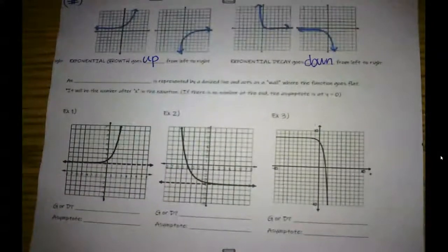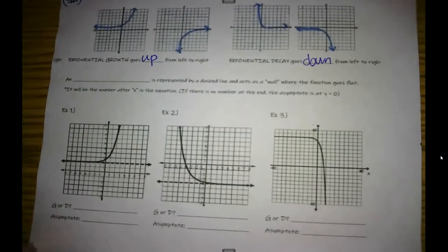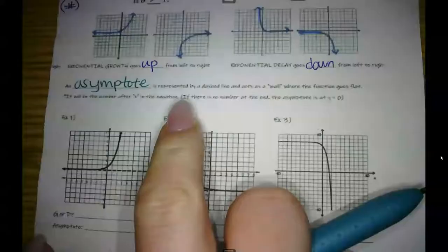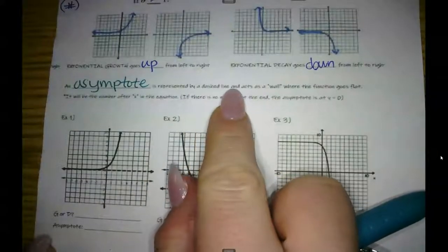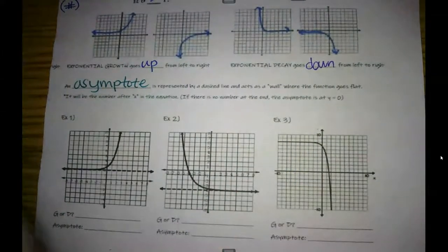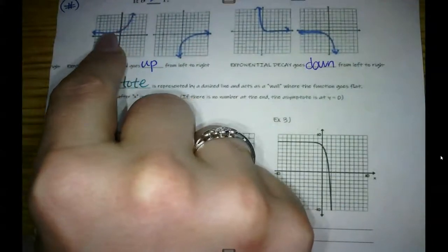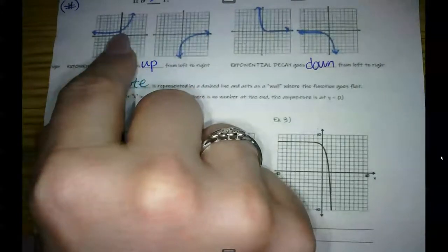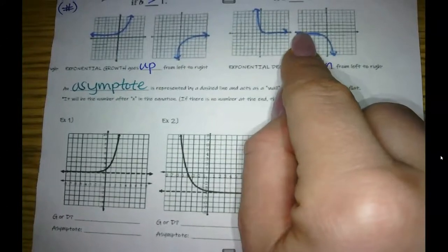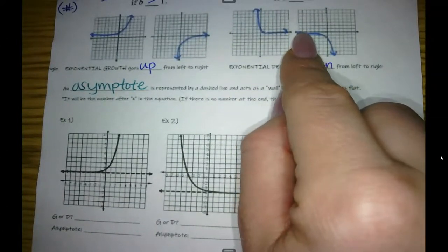So the only other part of these functions is this thing called an asymptote. And what this basically says, even though it's very blurry, let's see if I can clear that up, is an asymptote. And I'm going to spell it out right here. This graph here, it's not spelled how you would think, is represented by a dashed line and acts as a wall where the function goes flat. So you see how this graph, it starts bottoming out. Bottoming out. This one starts topping out, bottoming out, bottoming out. So that means that it's hitting this wall, this invisible wall that's called an asymptote.